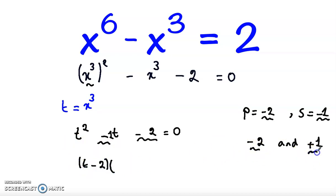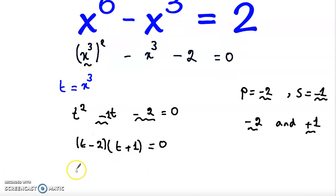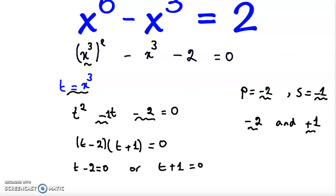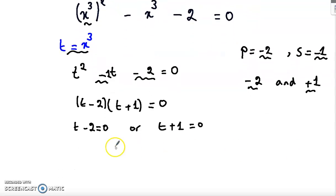So t minus 2 equals 0, or t plus 1 equals 0. But t equals x cubed, so x cubed minus 2 equals 0, or x cubed plus 1 equals 0.